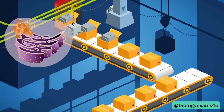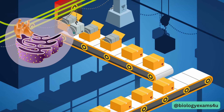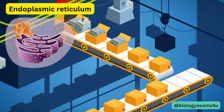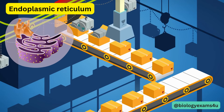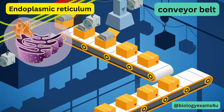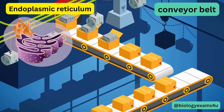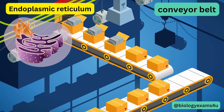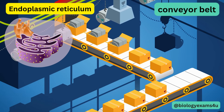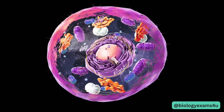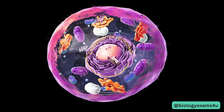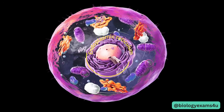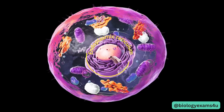Once the product is made, it is to be polished and transported for packaging. Here comes the endoplasmic reticulum, which is analogous to the conveyor belt of a factory through which products are modified and moved for packing. The ER is an interconnected membranous system where proteins are modified and transported.